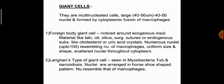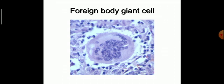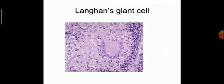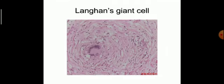Another particular type is the Langhans-type giant cell, mainly seen in tuberculosis — a granulomatous inflammation. In the Langhans-type giant cell, nuclei are arranged in a horseshoe shape at the border of the cell membrane, with uniform nuclei resembling those of macrophages. This is a picture of a foreign body giant cell showing multiple nuclei, a large cell with abundant cytoplasm and uniform nuclei. This is a Langhans giant cell with the characteristic horseshoe nuclear arrangement.